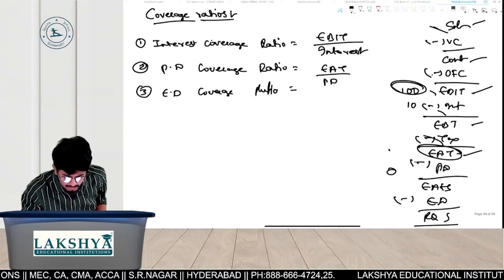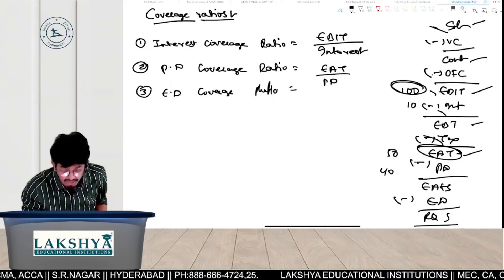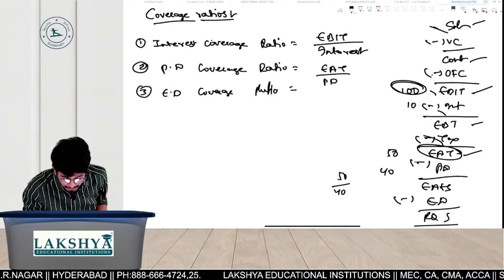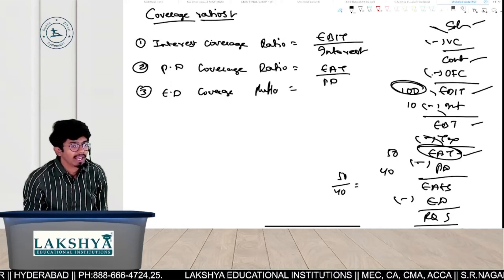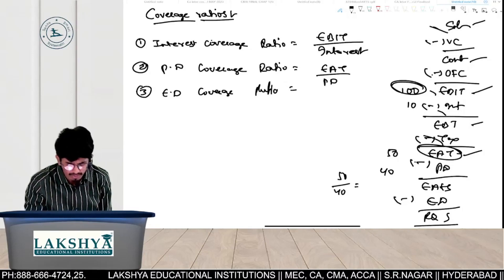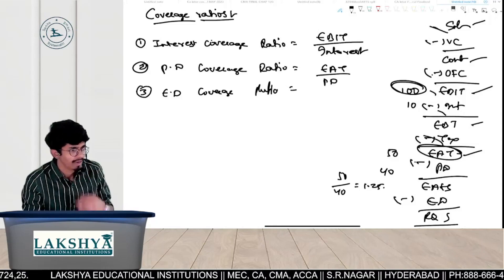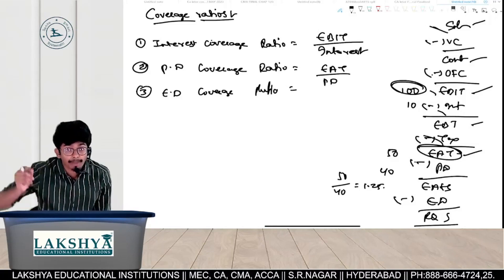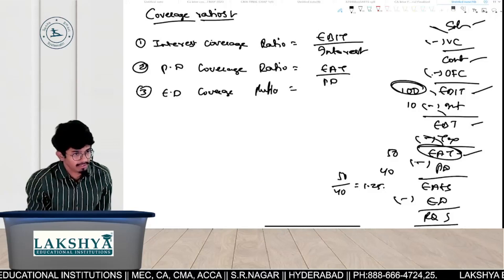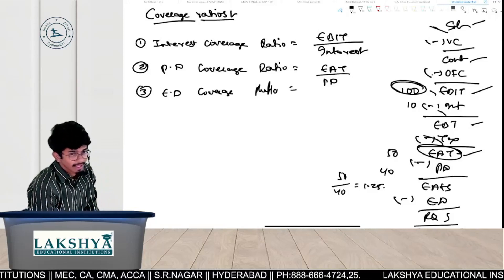For example, Earnings After Tax is 50, Preference Dividend is 40. So 50 divided by 40 equals 1.25. Meaning, in order to pay 1 unit of preference dividend, the company is earning 1.25 units.